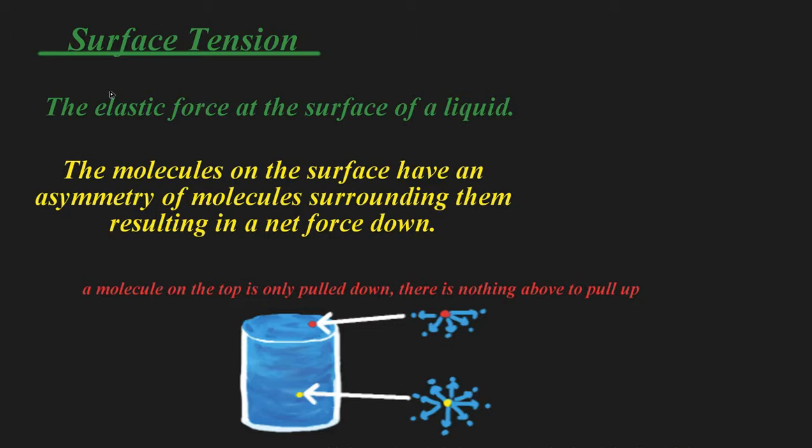So what is this property called surface tension? How does it arise? Well, it has to do with the type of bonding that occurs at the surface versus the main bulk or body of the liquid.